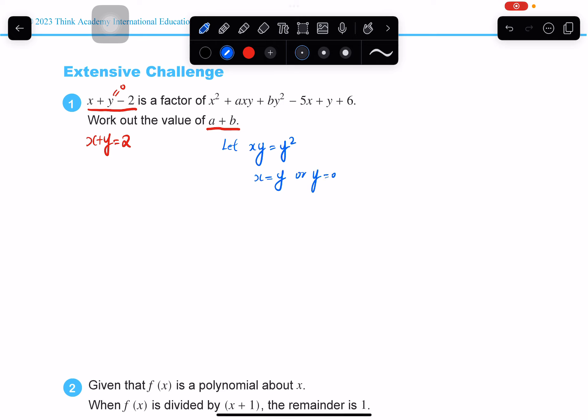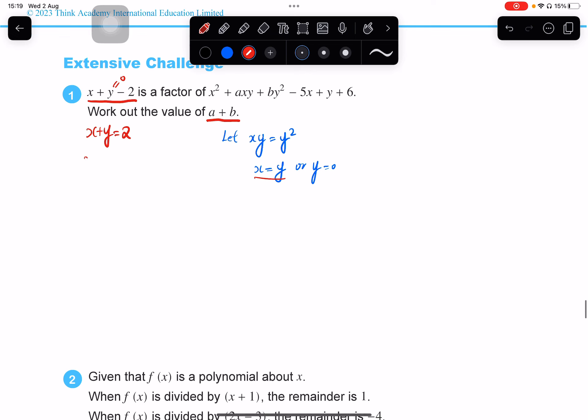So of course, if y is equal to 0, then a and b would be meaningless because anything multiplied by 0 will be 0. So it doesn't really matter what the value of them is. So I would like to choose x equals y, which means that x is equal to y and that's equal to 1.